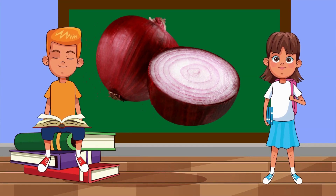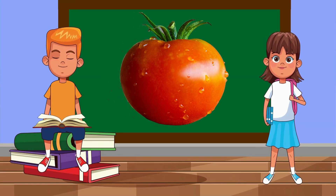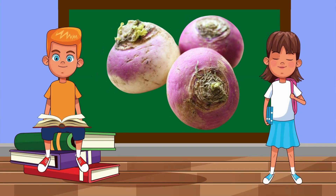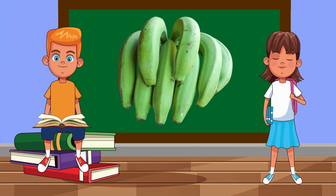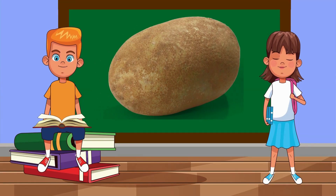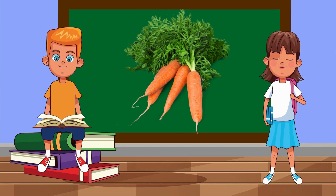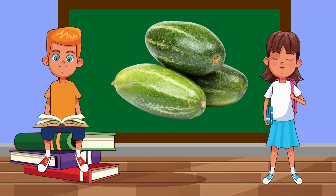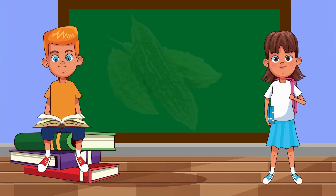What is this called? Onion. Can you name this? Tomato. What is this called? Turnip. Can you name this? Raw banana. What is this called? Potato. Can you name this? Carrot. Can you name this? Pointed gourd.